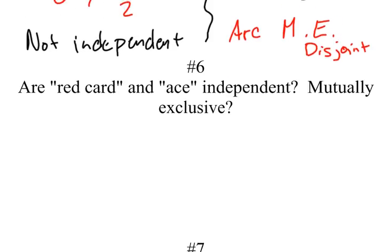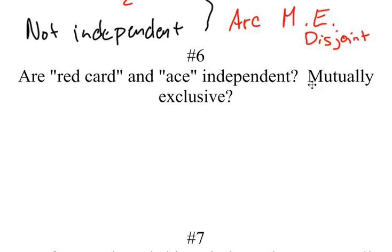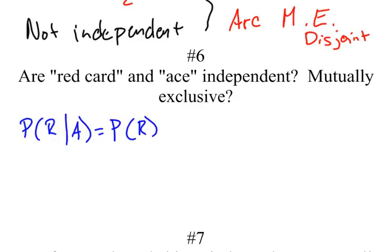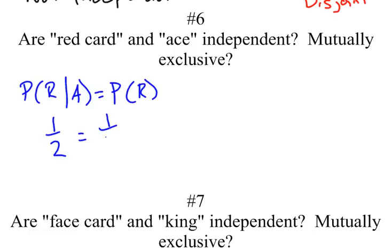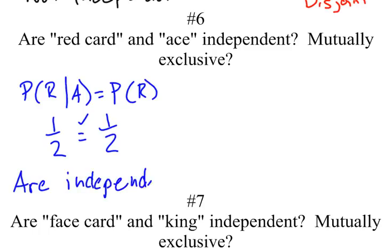Next example: are red card and ace independent, and are they mutually exclusive? To check independence, what is the probability of having a red card given that it is an ace? If I have an ace, there are four aces and two of those four are red, so it's one half. The probability of having a red card is also one half. Is one half equal to one half? Yes. So red card and ace are independent.